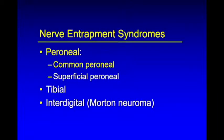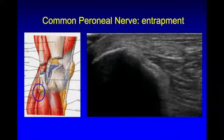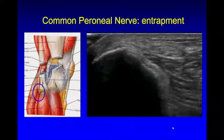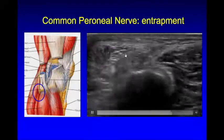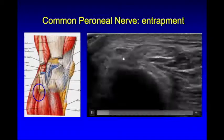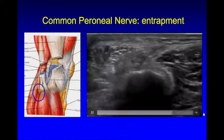Wrapping up with the lower extremity, beginning with the common peroneal nerve. We see this nerve paralleling the biceps femoris as it goes into a tunnel underneath the peroneus longus muscle — also prone to injury from fibular fracture. Here's the nerve, and as we move distally we see it get enlarged as it tries to fit underneath the peroneus longus muscle, becoming hypoechoic. Pushing on this induced symptoms.